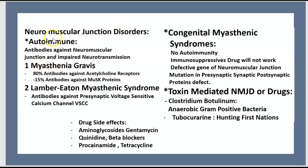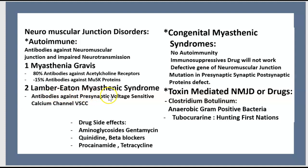Neuromuscular junction disorders include autoimmune, congenital myasthenic syndrome, toxin-mediated, and drug side effects. Autoimmune disorders: myasthenia gravis (80% antibody against acetylcholine receptor, 15% antibody against muscle-specific kinase protein) and Lambert-Eaton myasthenic syndrome (antibody against presynaptic voltage-sensitive calcium channels, VSCC).